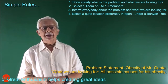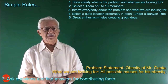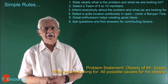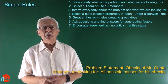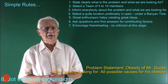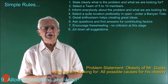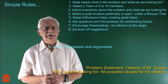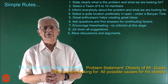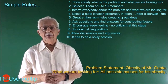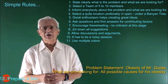Rule 5 — Great enthusiasm helps create great ideas. Rule 6 — Ask questions and find answers for contributing factors. Rule 7 — Encourage free will; no criticism at this stage. Rule 8 — Jot down all suggestions. Rule 9 — Allow discussions and arguments. Rule 10 — It has to be a noisy session. Rule 11 — Use multiple colors. Rule 12 — Prepare a fresh Ishikawa Diagram showing more arrows on the straight line.